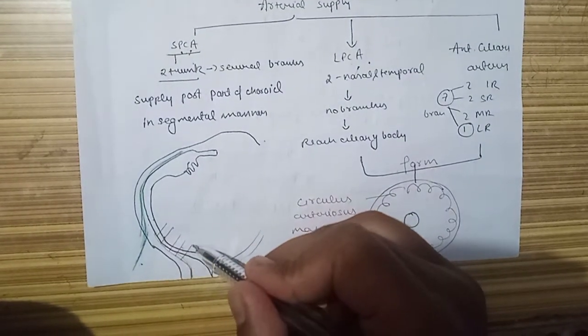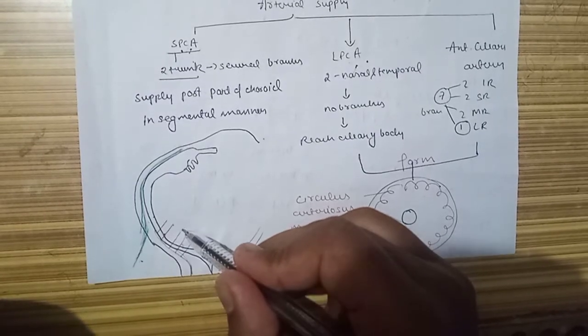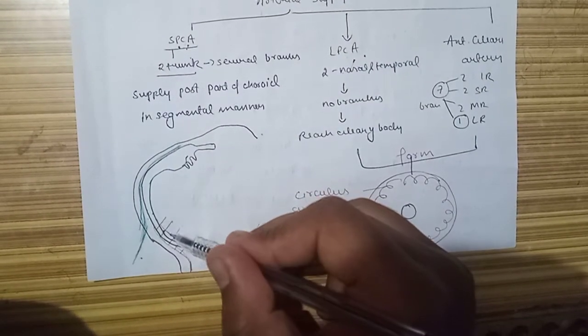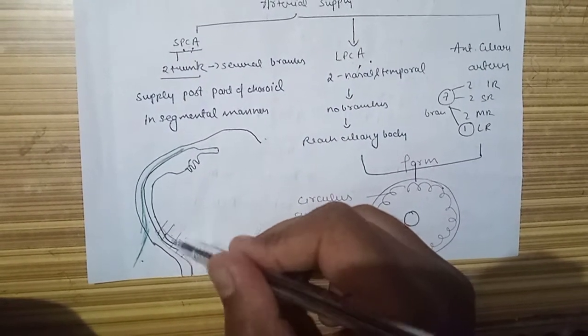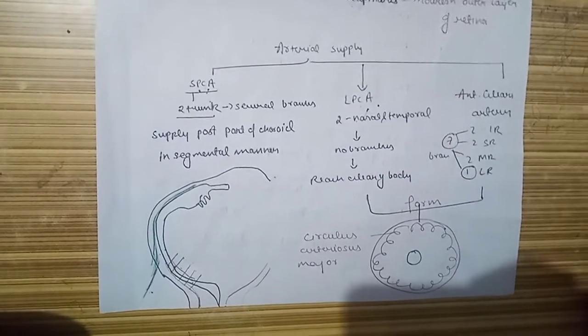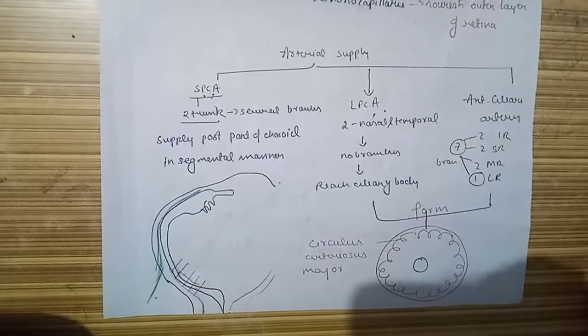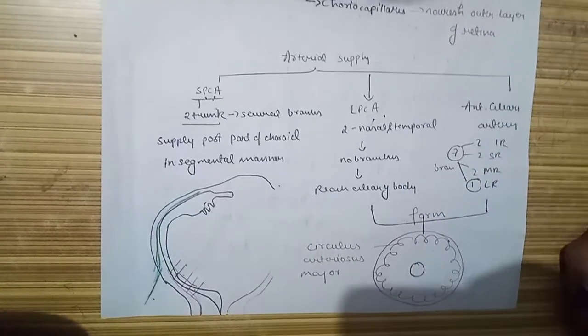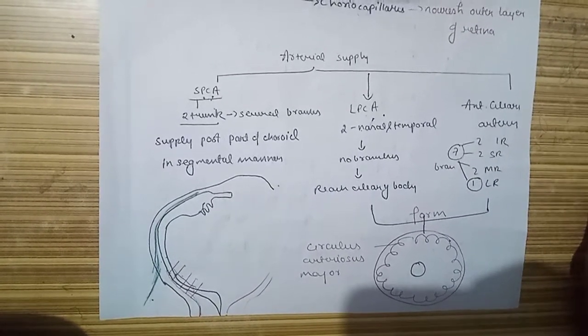It divides into several branches, and these branches supply our choroid in a segmental manner. This is what the short posterior ciliary artery does—our choroid is supplied. Now comes the part of our ciliary body and iris.